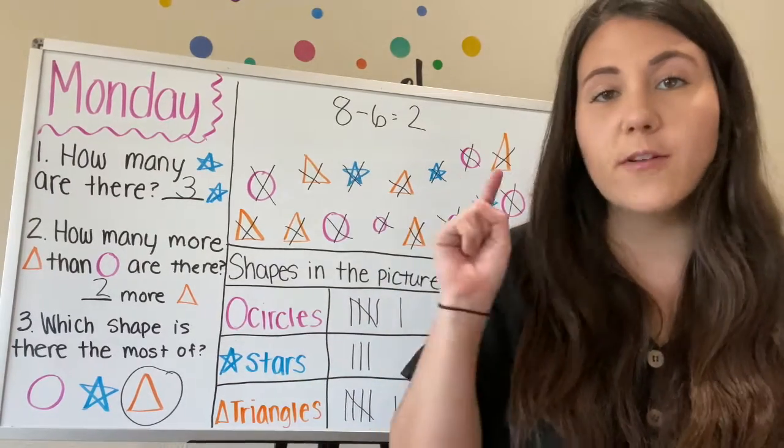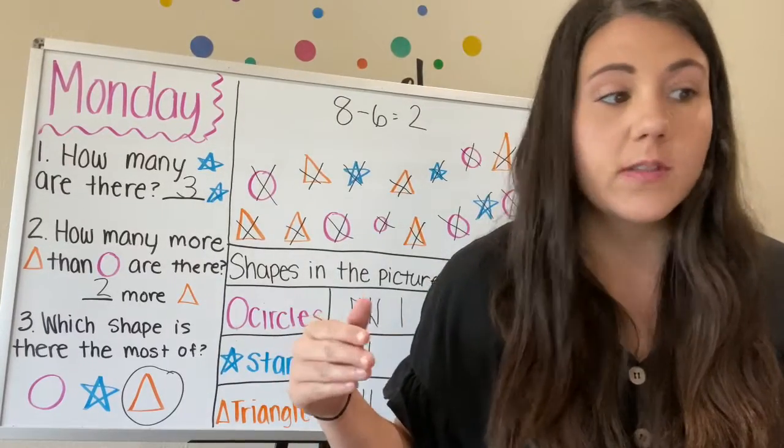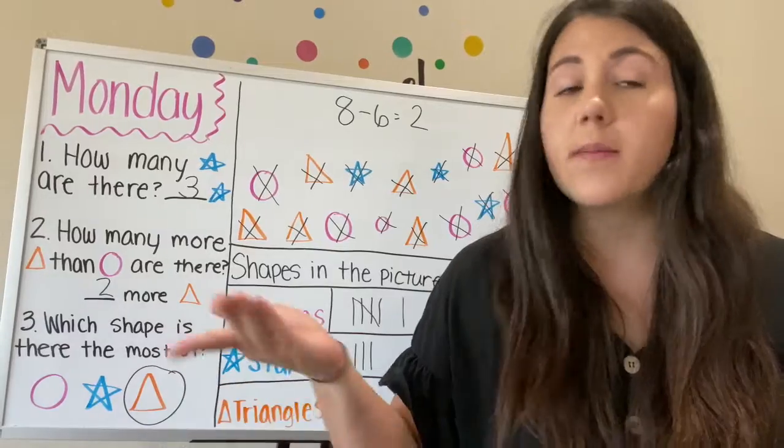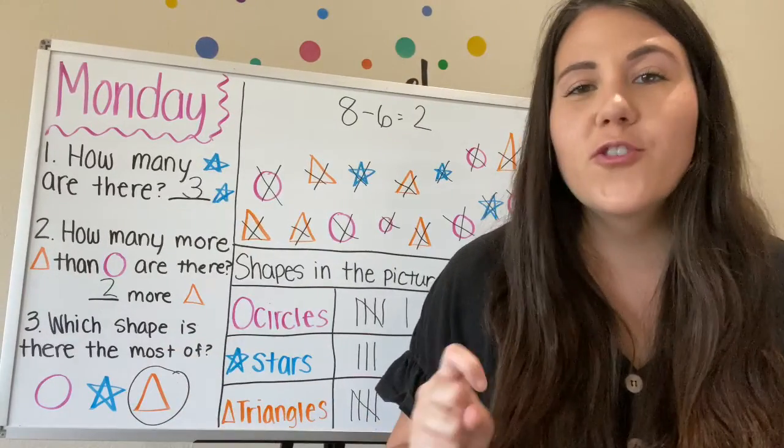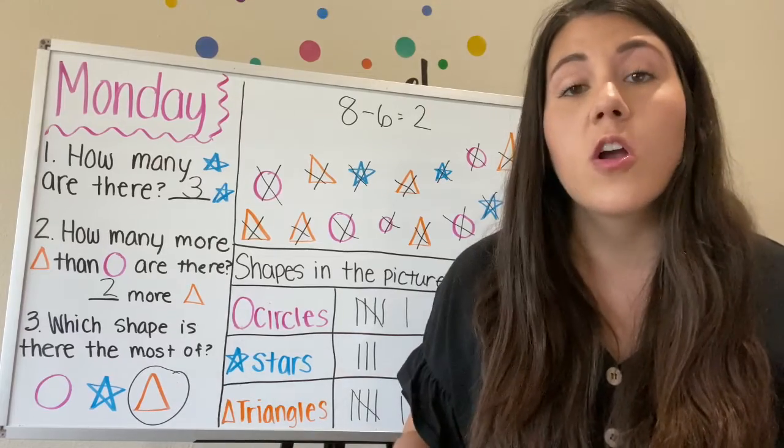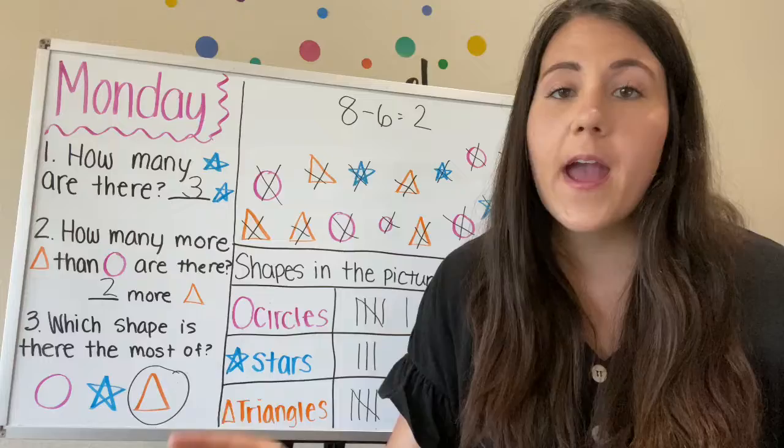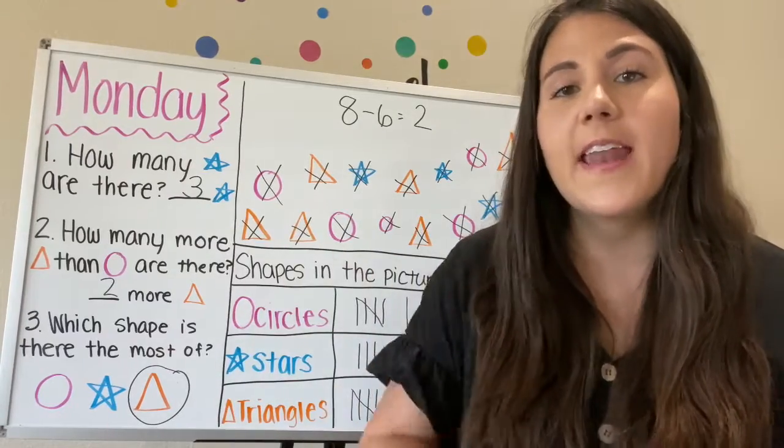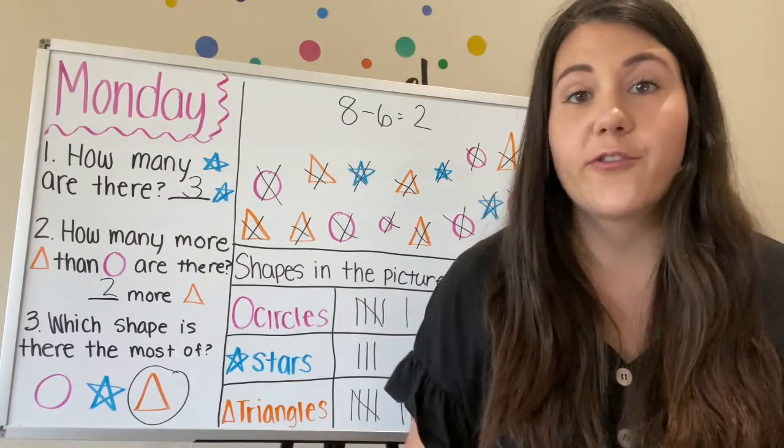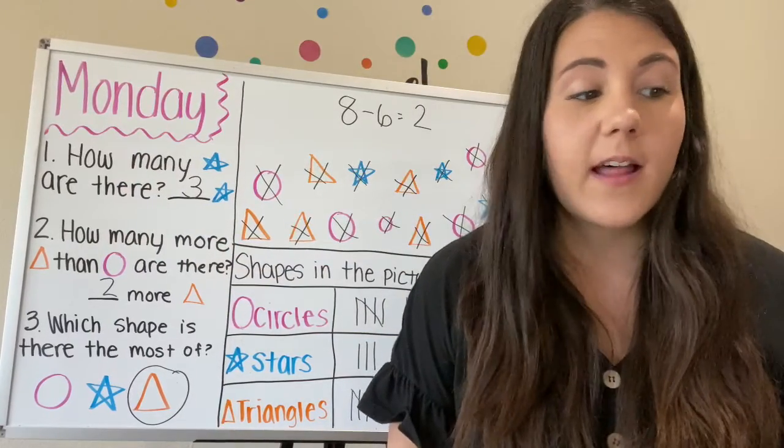Awesome job. So now it's your turn. On the next paper, it shows lots of different circles. And it says to color some circles red, some circles blue, and some yellow. You're choosing how many circles you want to color of each color. You're going to make a tally chart to show how many you colored. So how many did you color red? How many did you color blue? And how many did you color yellow? Then you're going to answer three questions, just like we did over here.